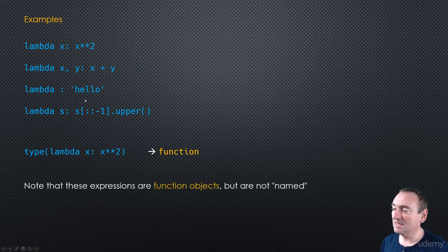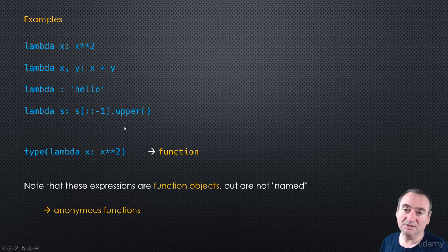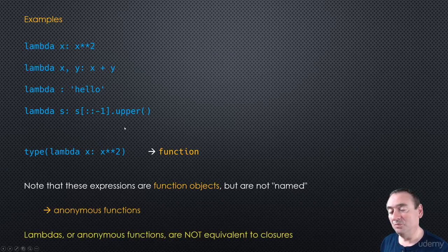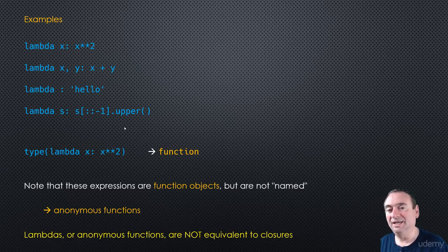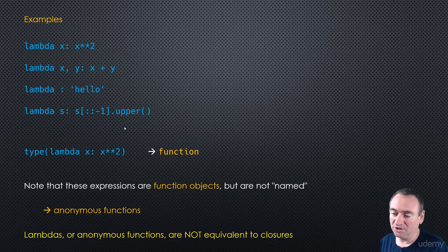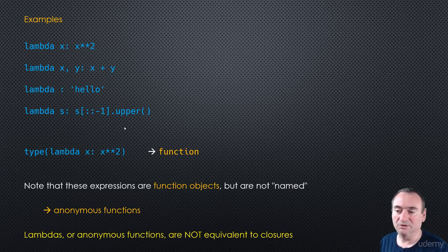All these expressions are function objects, but they are not named — that's why we call them anonymous functions. I want to point out something: you may have come across the idea that lambdas or anonymous functions are closures. No, they're not — they are not the same thing. Lambdas or anonymous functions can be closures, but they don't have to be. They're just regular functions. We'll look at closures later on in this section.